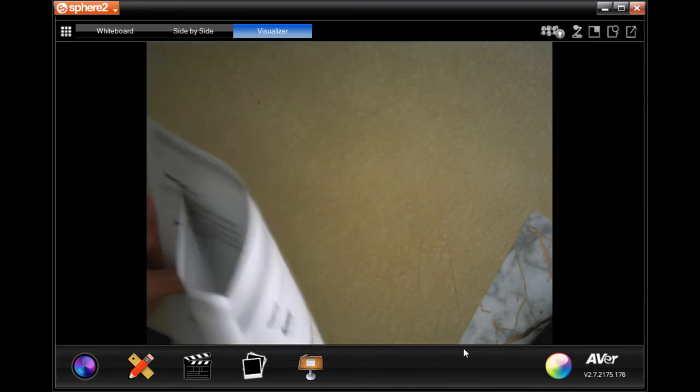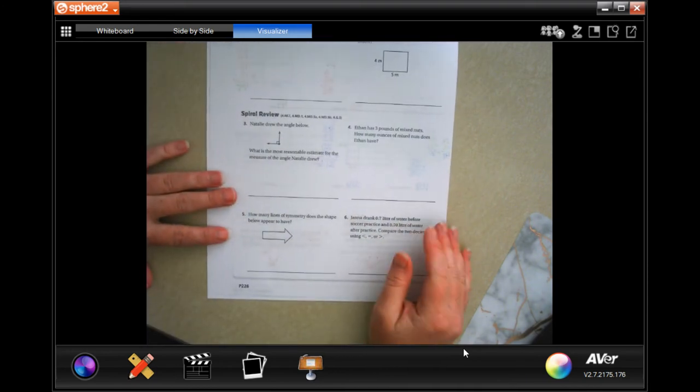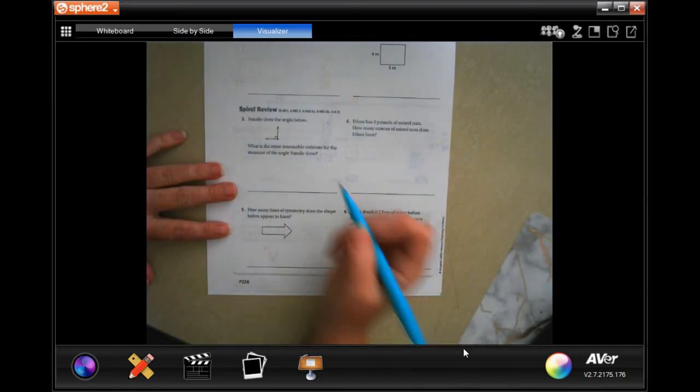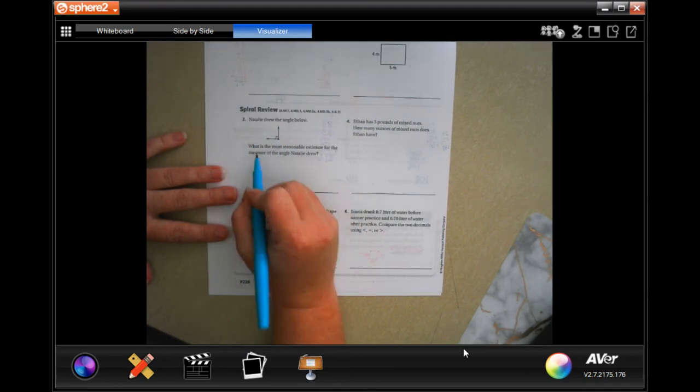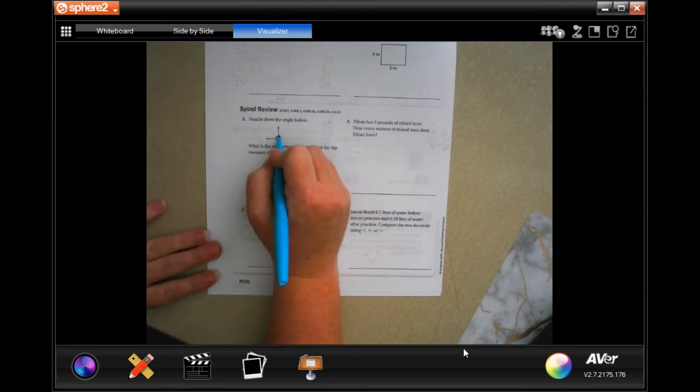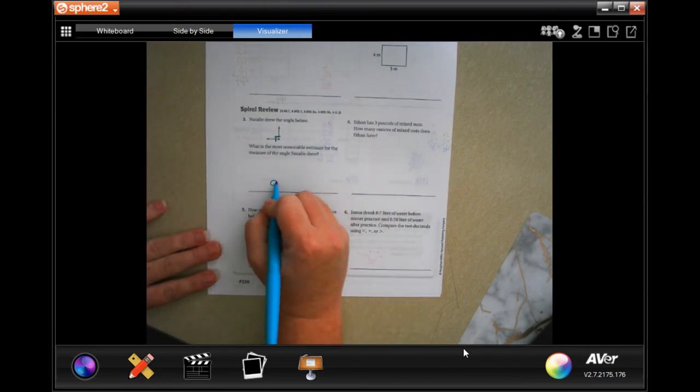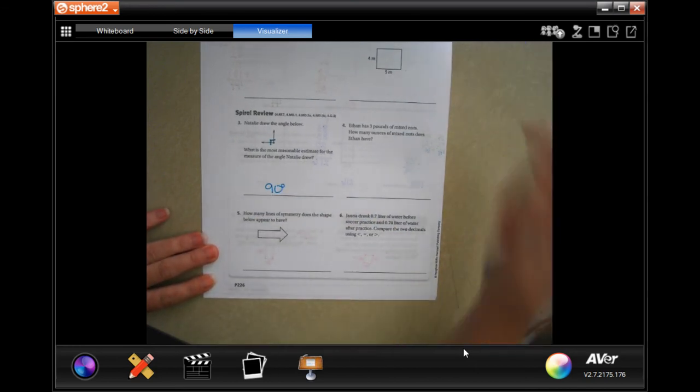All right. We're going to go over onto the back where you guys are going to do the lesson check, just like always, and we're going to go down and do the review. Natalie drew the angle below. What is the most reasonable estimate for the measure of the angle Natalie drew? Well, that little box right there tells us it's 90 degrees. Done.